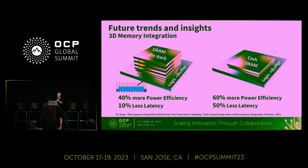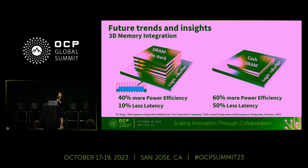This page shows future trends and insights. As package sizes grow, assembly and reliability challenges increase. We have a solution with active customer engagement: DRAM core die stacked on a customized logic die, where the logic die provides the buffer function of traditional HBM. This saves 40% power and reduces latency by 10%. We also have a solution with in-cache DRAM stacked on a customized logic die, providing 60% power efficiency and 50% latency improvement — though this is more of a future project.